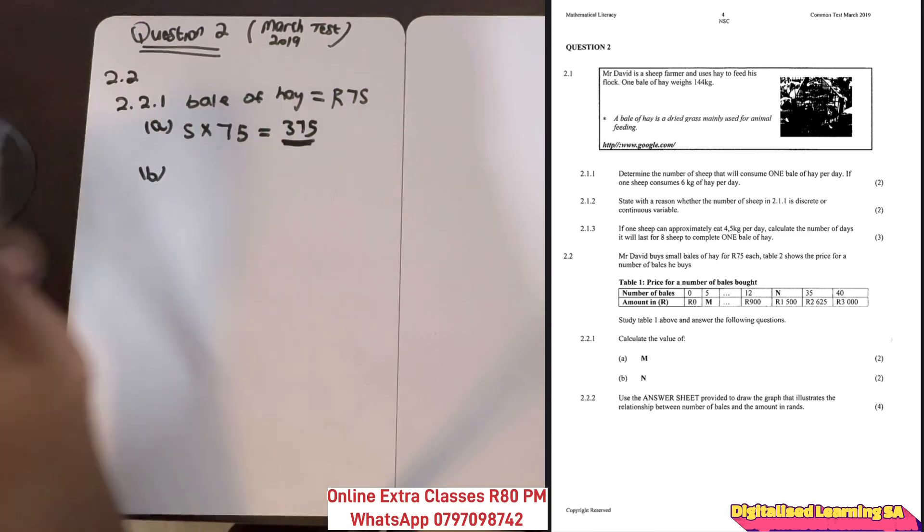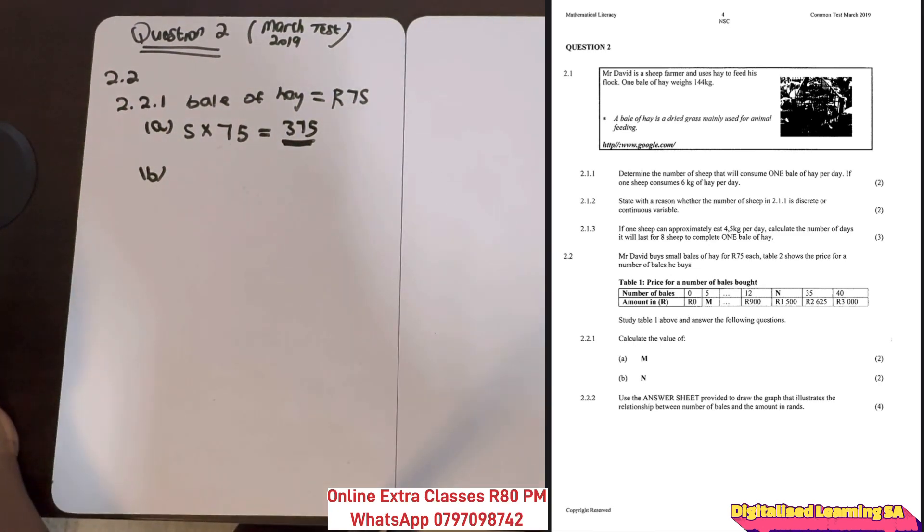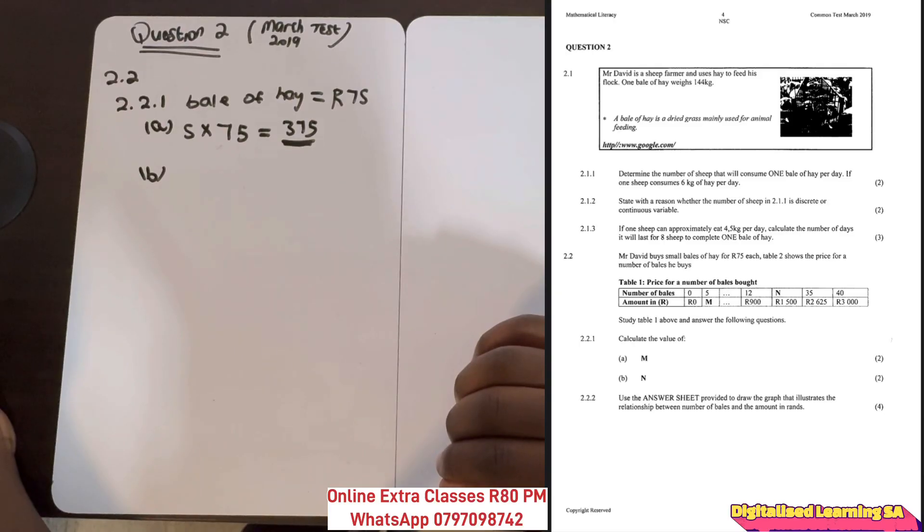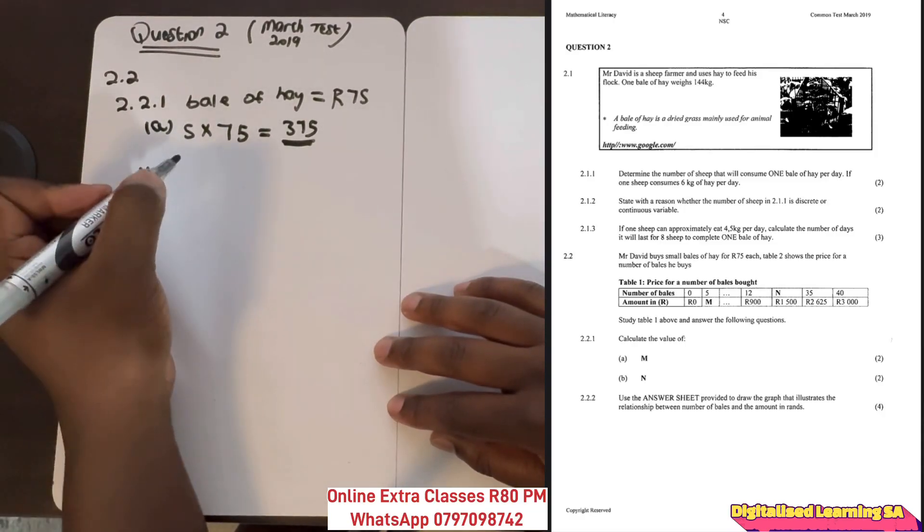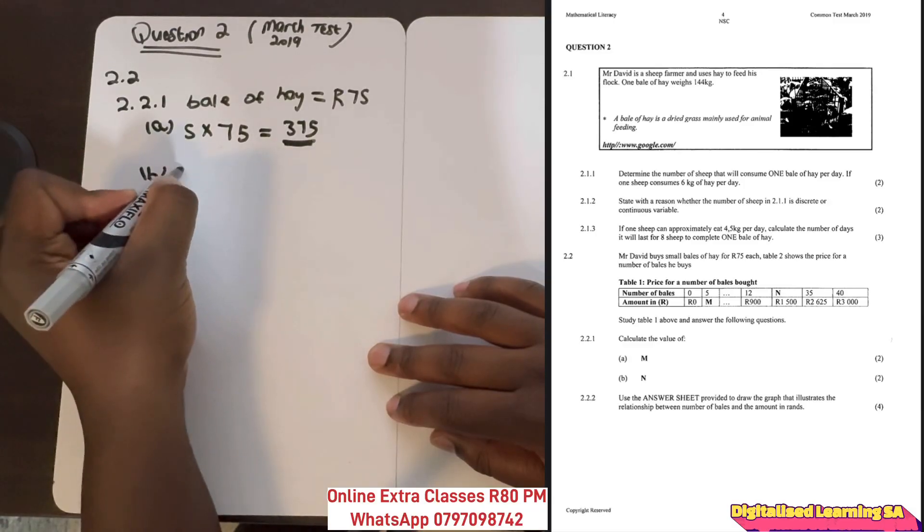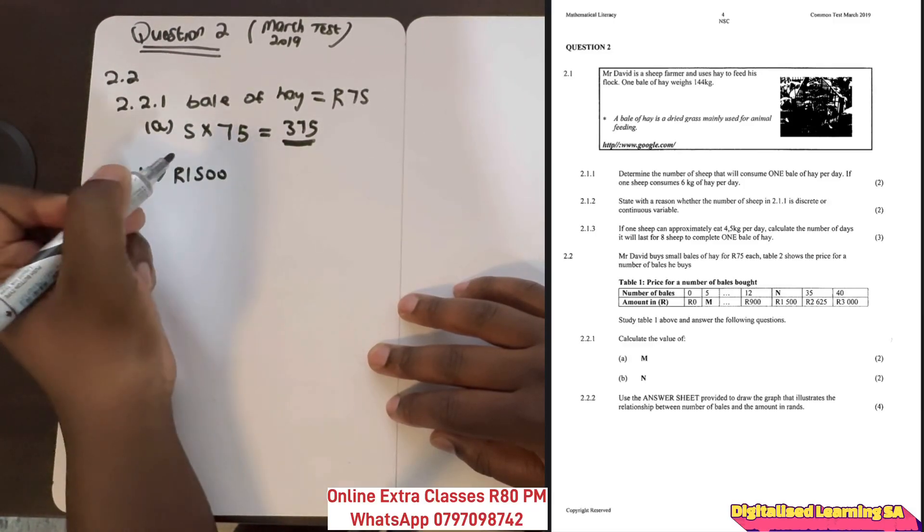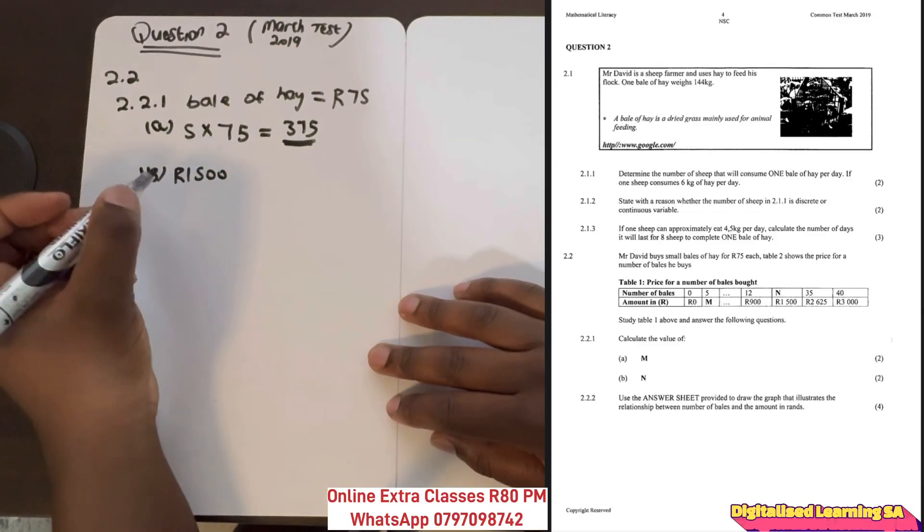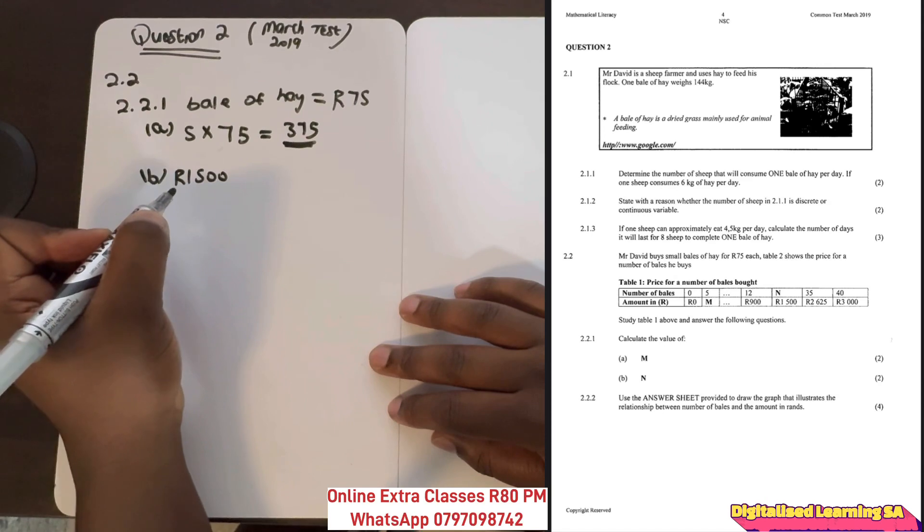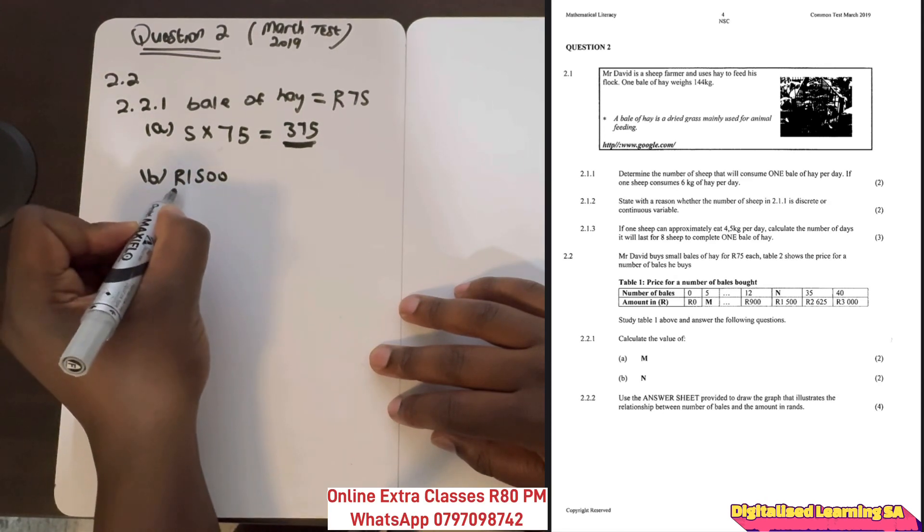And that's our final answer. Part b says calculate n. With n, we are given how much the bales that Mr. David bought cost. The bales cost 1500 francs, and we know that each bale costs 75 francs. To get the number of bales, we divide.